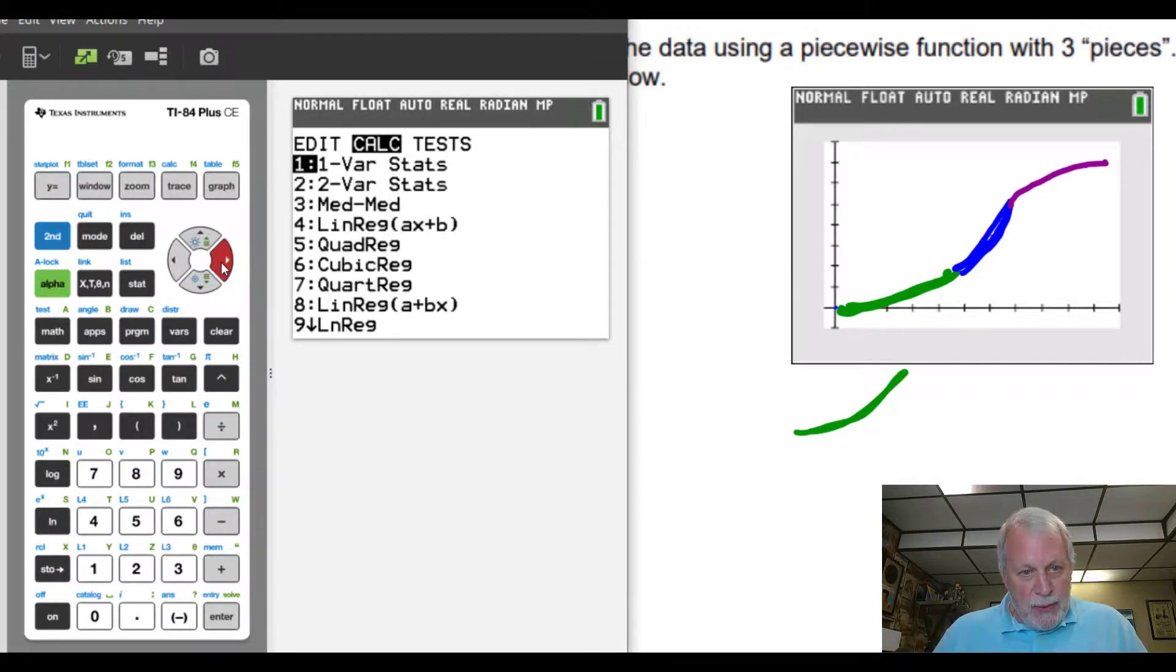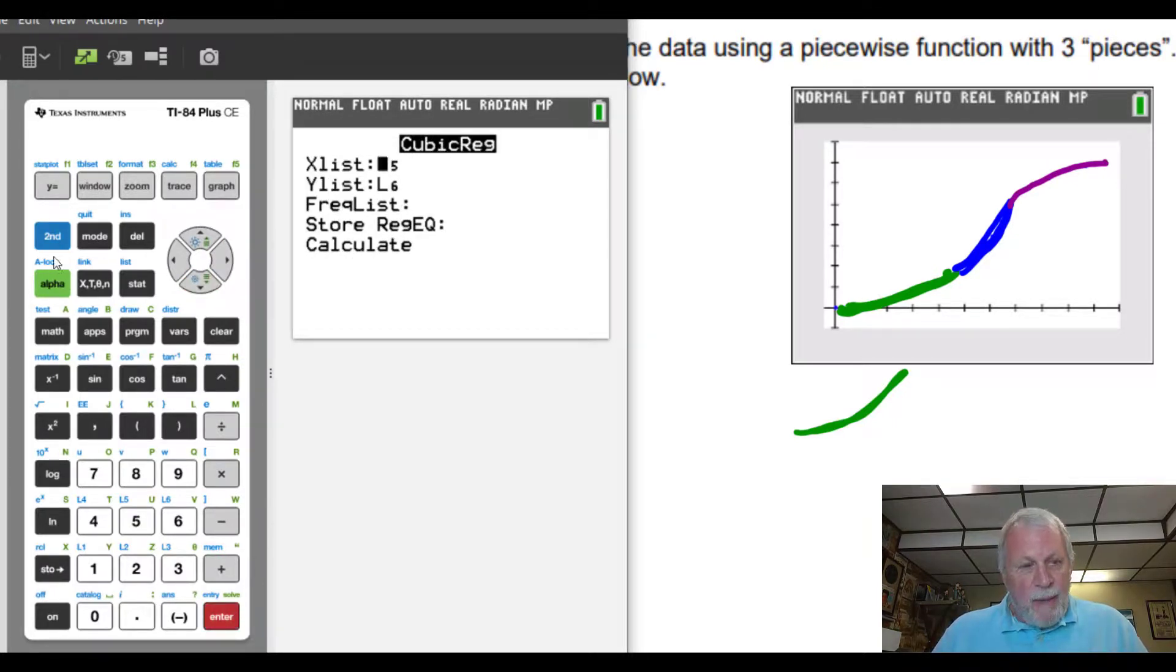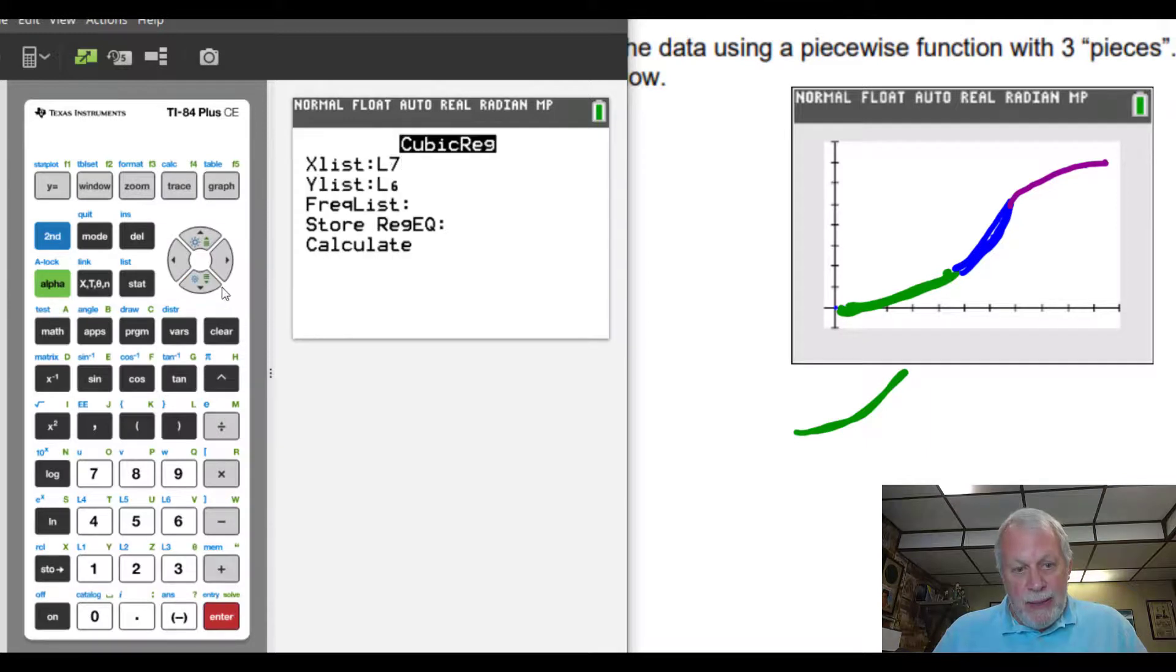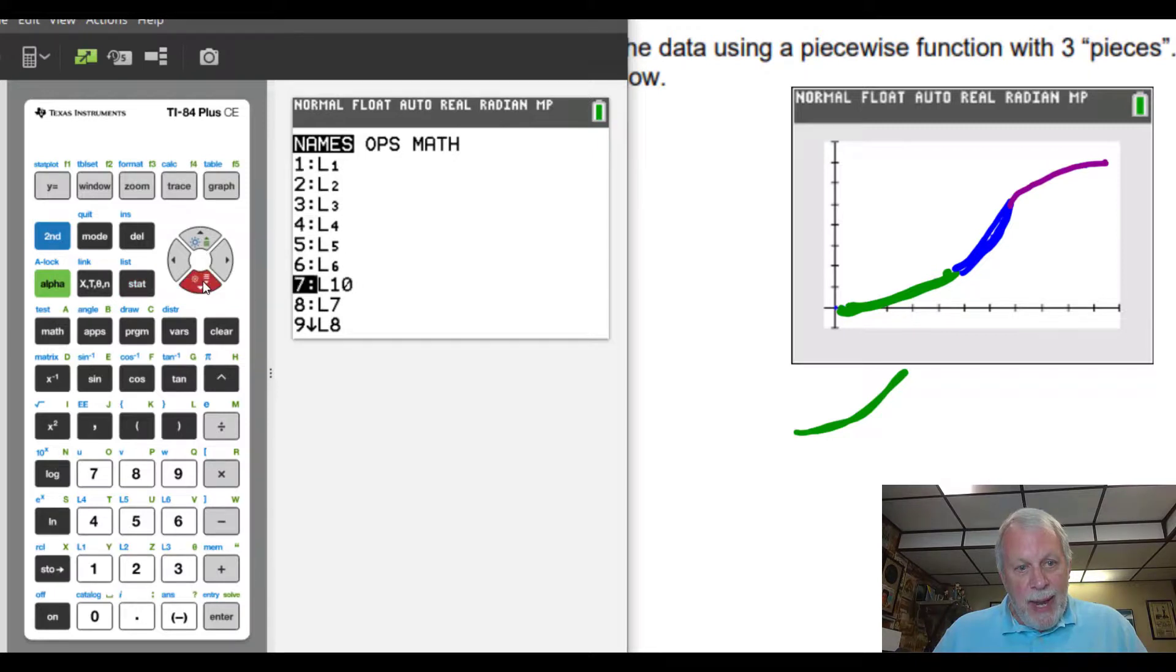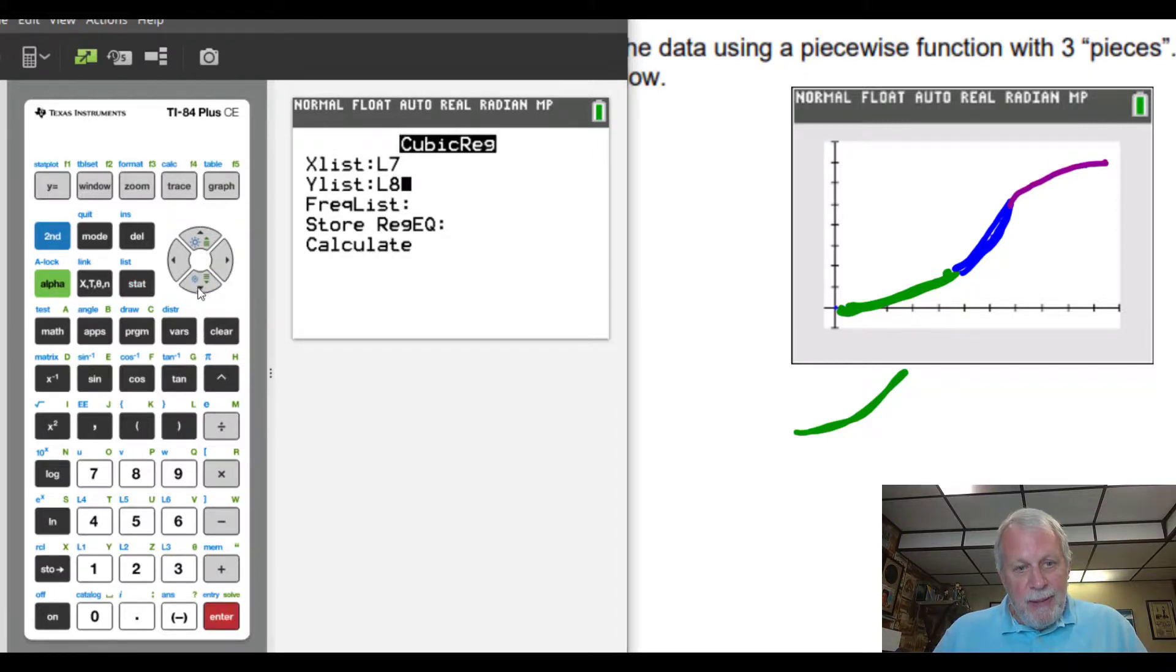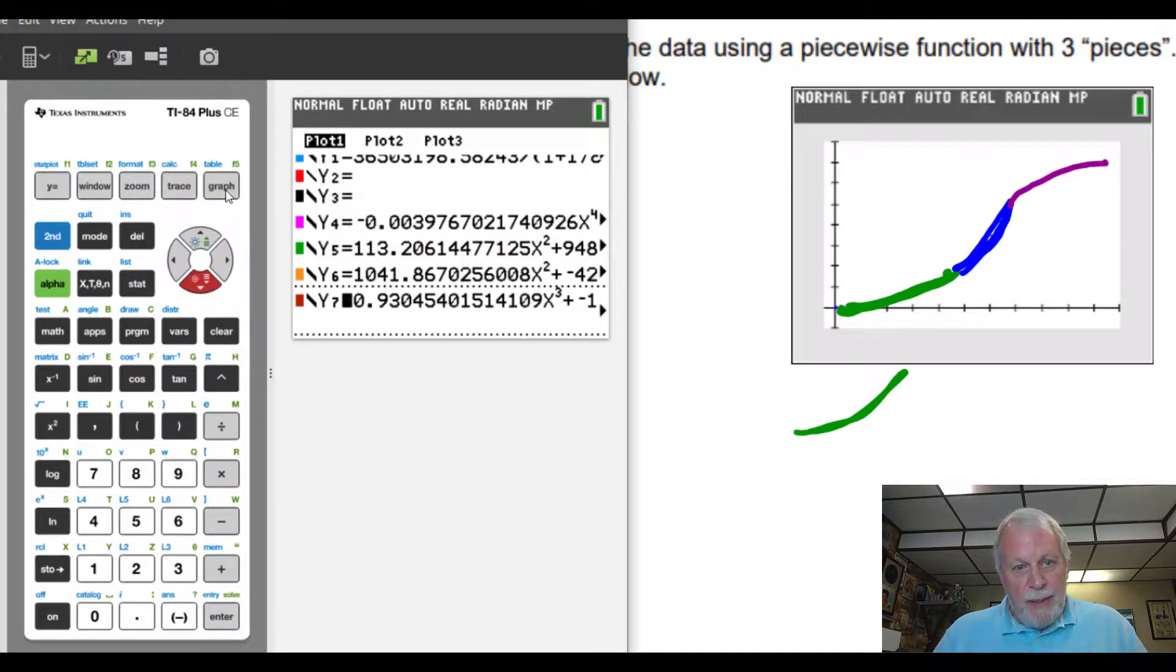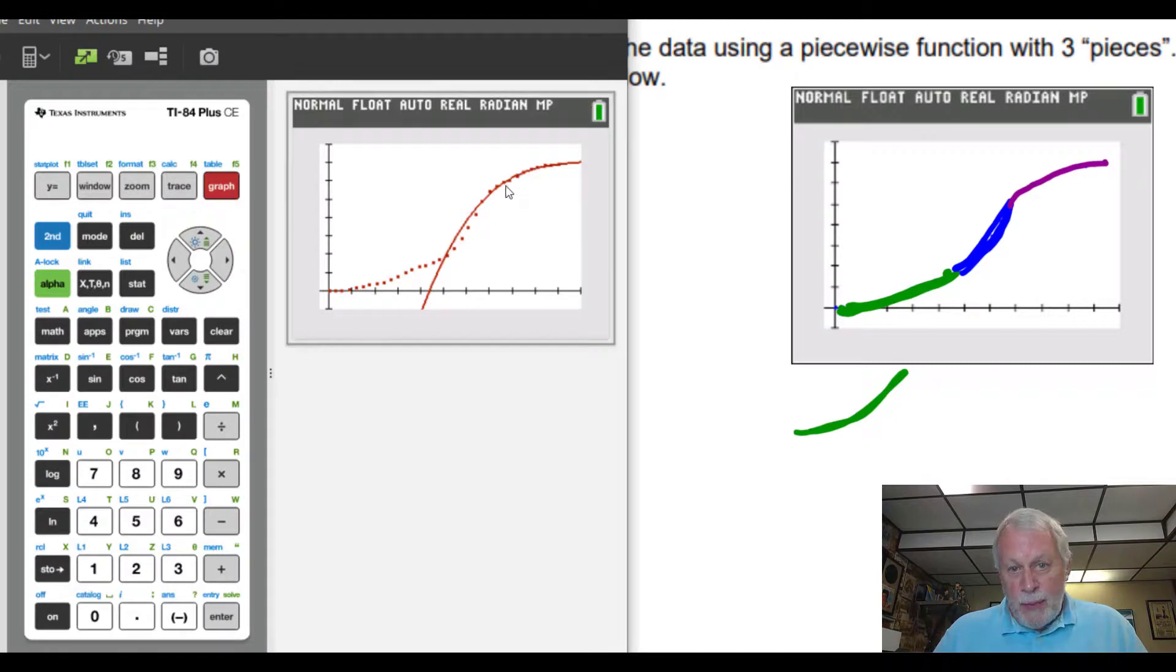And then I'll finally do the last data. So stat, calculate, only this time I'm going to use a cubic. I could have done a quadratic, but just to be different, a cubic. Now for L7, I have to go to the list list and find L7 in the list. And there it is. Similarly, for the Y list is a second list and I have to find L8. Paste that in there. And we're going to go up to Y7 now, alpha trace Y7. Calculate. And now for the last part, let's see how that graph looks for the last part. Turn off Y6. Keep Y7 on. And graph just for the last part. You can see it's pretty good.